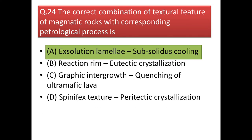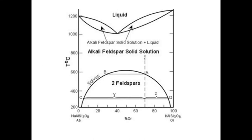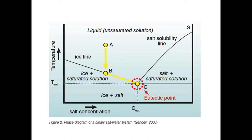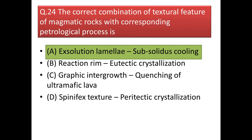Next question: the correct combination of textural features of magmatic rock with corresponding petrological process? Option 1: exsolution lamellae corresponds to subsolidus cooling — in exsolution lamellae two phases separate and that occurs through subsolidus cooling, so option 1 is correct. Reaction rim in eutectic crystallization is not correct because in eutectic crystallization there is no reaction involved. Graphic intergrowth in quenching of ultramafic lava is also not possible, as quenching produces glassy texture with no graphic intergrowth.